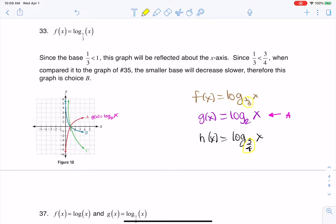But because one-third is less than three-fourths, this one right here that has the smaller base is actually going to decrease slower.